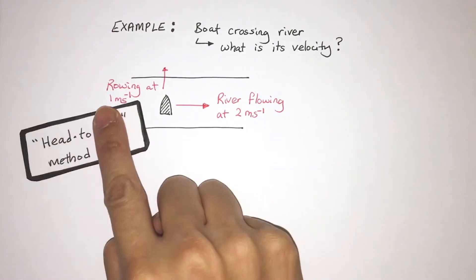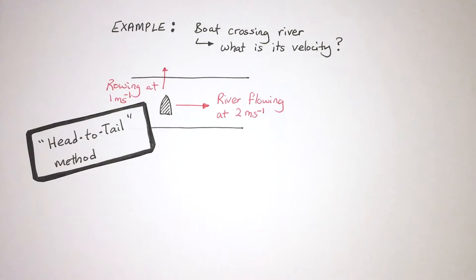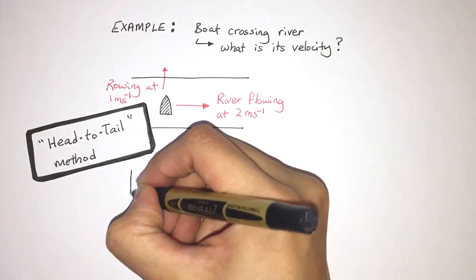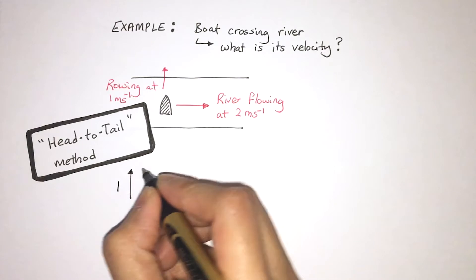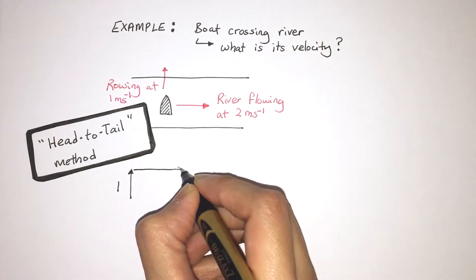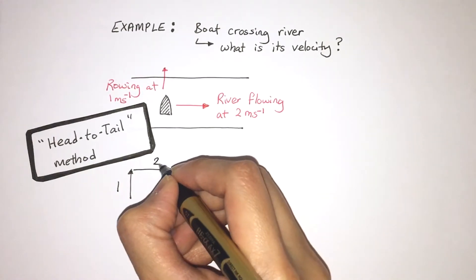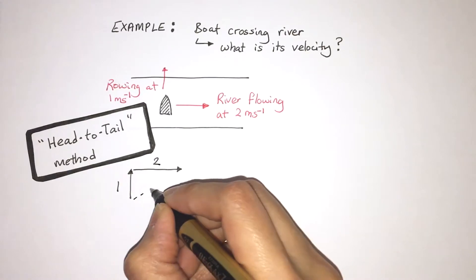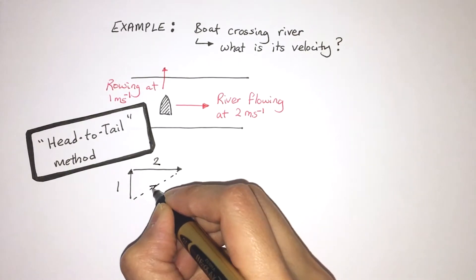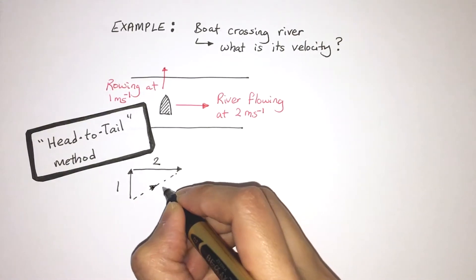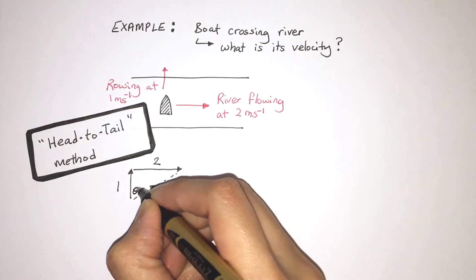And again, we use the head to tail method. I redraw this diagram again, starting with the vertical arrow. And that's 1 meter per second. And my horizontal arrow is 2 meters per second. The dotted line is showing the resultant velocity. And angle theta is the direction of this new velocity.